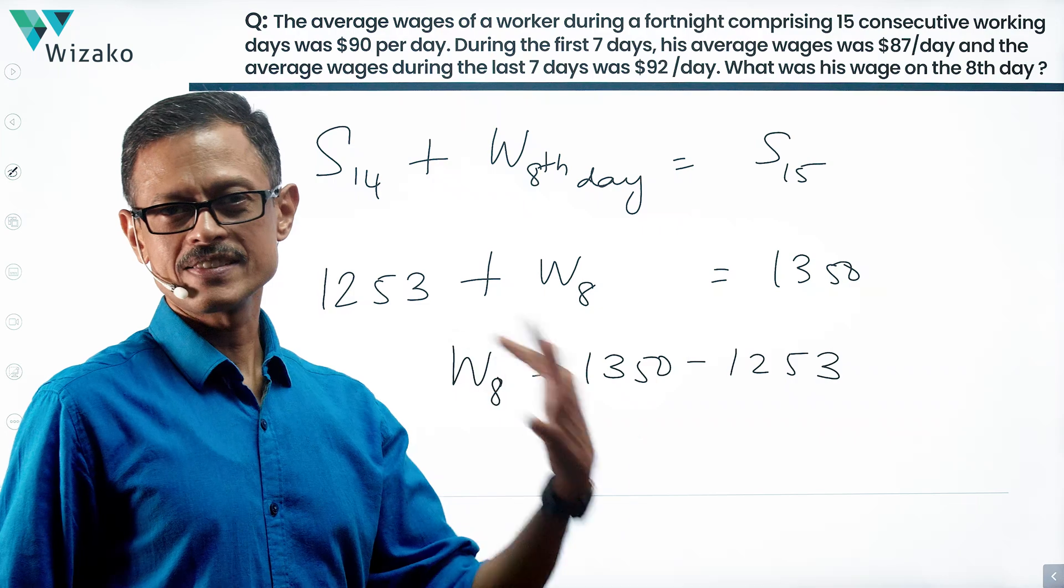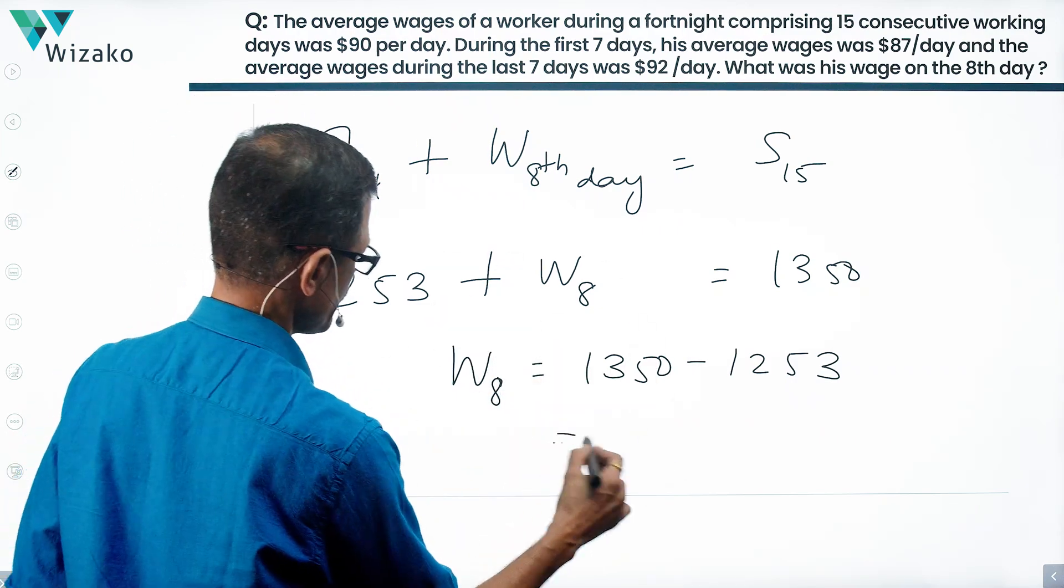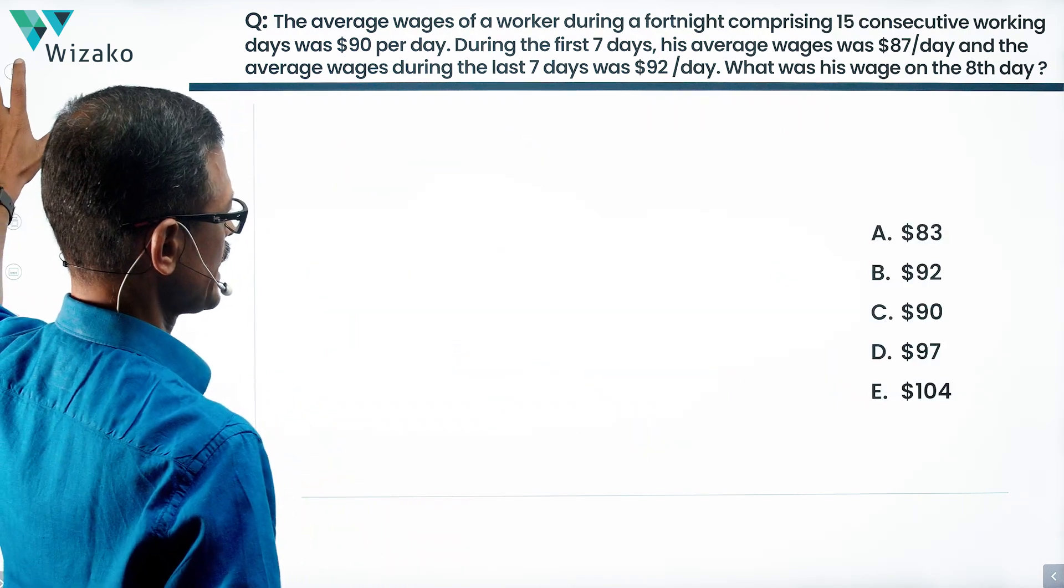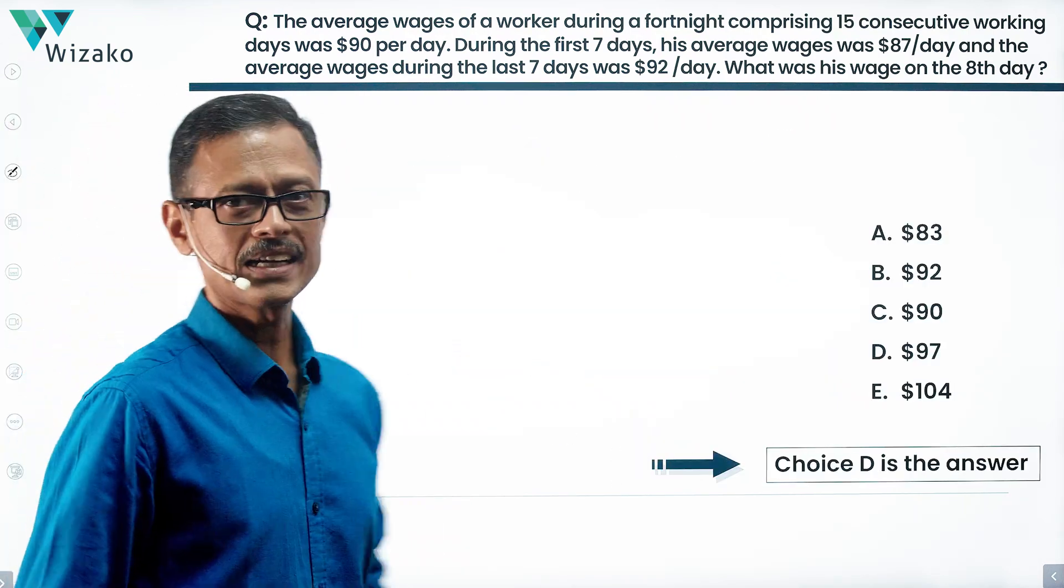Wage for eighth day is 1350 minus 1253. 1350 minus 1250 is 100, minus 1253, so subtract 3 from it. That's going to make it 97. So the wages on the eighth day is equal to $97. Choice D is the correct answer to this question.